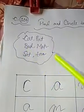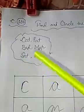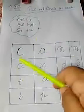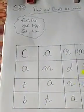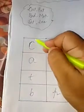What are the words in the box? Cat, pet, bed, map, set, ten - that is six words. Now you have to find out the word and make a circle for each word. Okay, let's start. Cat, find out cat.